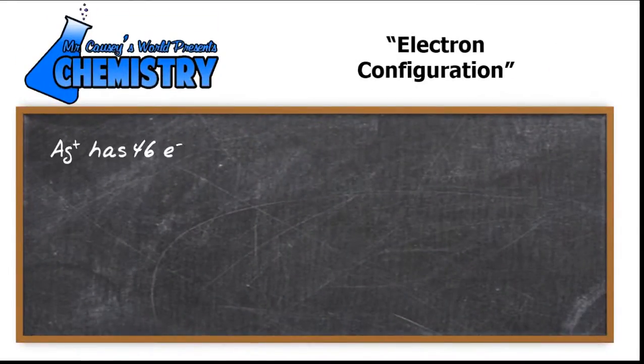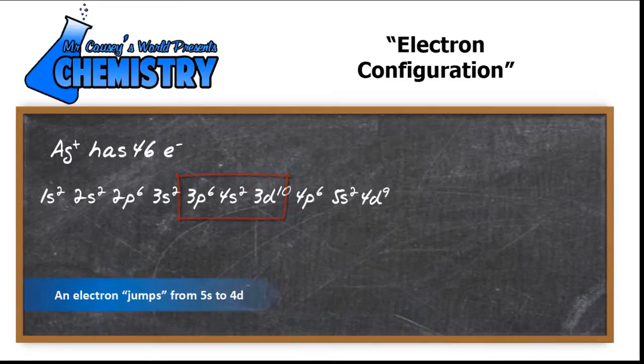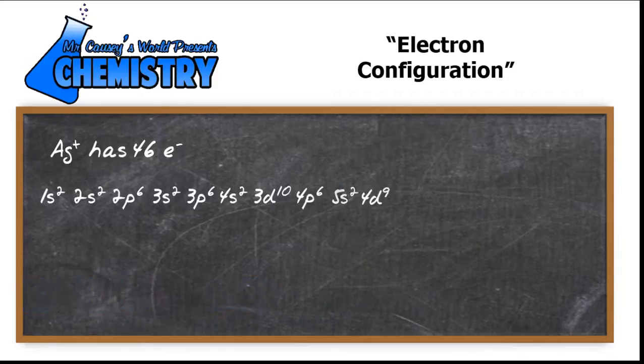So let's write the electron configuration. The silver ion, or the silver cation, has 46 electrons. And you'll note there, let's remember there's an overlap, and we have our electrons. But remember that now we're going to have a jump, just like we did in copper.